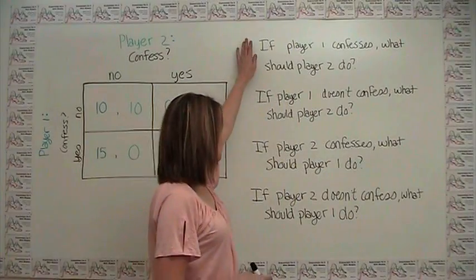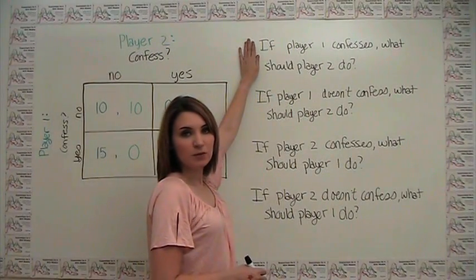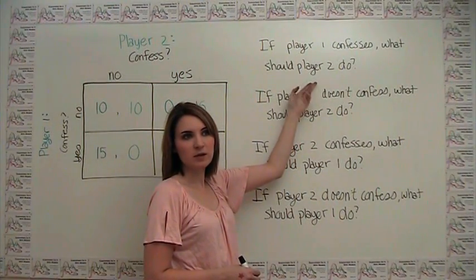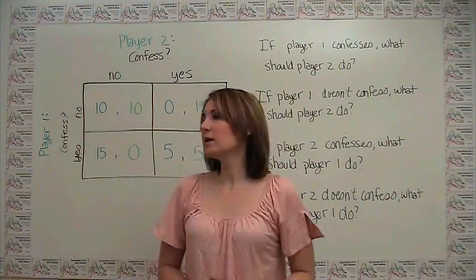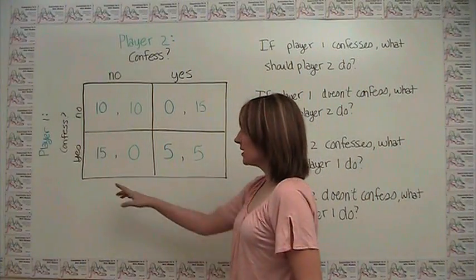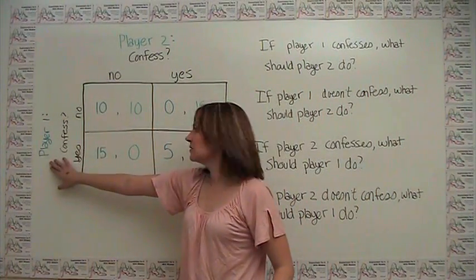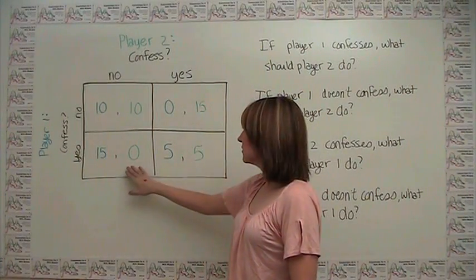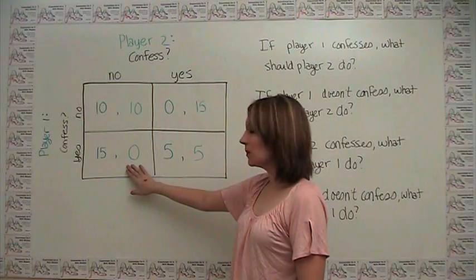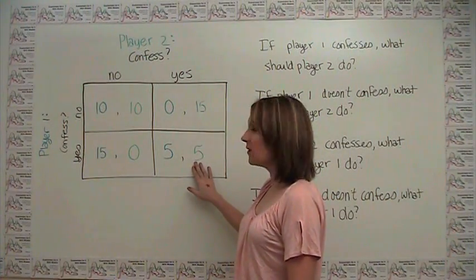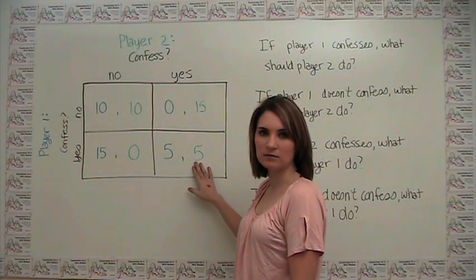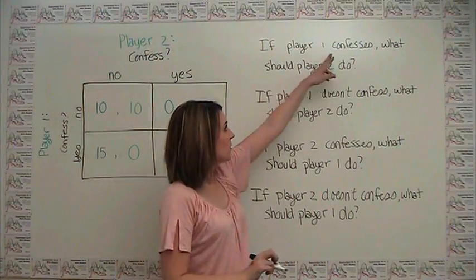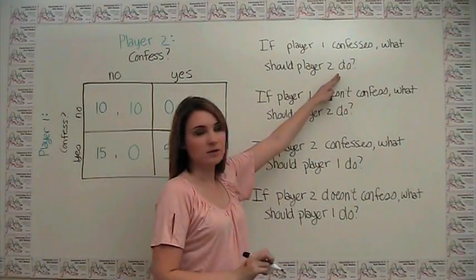So let's take the first case here. Say, if player 1 confesses, what should player 2 do? In other words, what's player 2's best response? Well, we can go over here, and we say, if player 1 confesses, we're somewhere in the bottom here, and player 2 can either get 0 by holding out and being quiet, or he can get 5 by confessing also. 5 is strictly better than 0, so if player 1 confesses, player 2 also wants to confess.